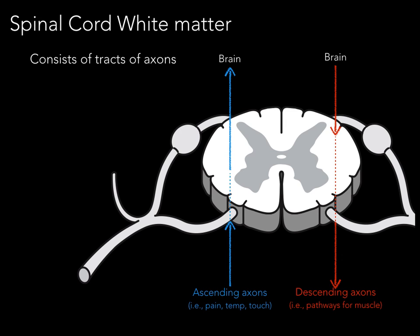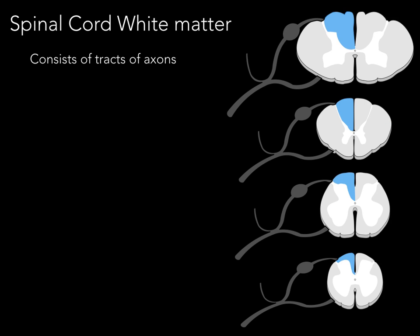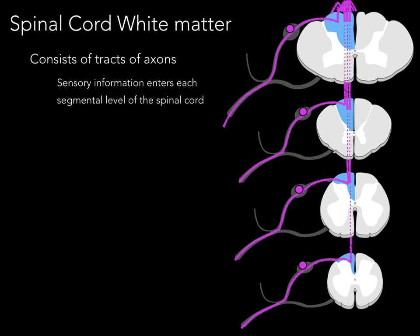When you touch a flame, information goes into the dorsal root of the spinal nerves and ascends up to the brain. The brain then sends information down in descending axons to tell ventral horn cells to send a lower motor neuron to press play on the DVD player. Sensory information enters each segmental level of the spinal cord — sacral, lumbar, thoracic, cervical — and ascends to the brain via the white matter tracts.